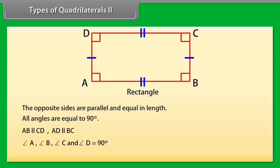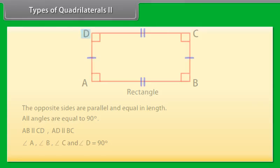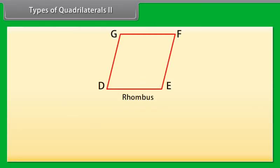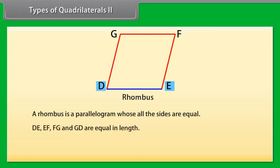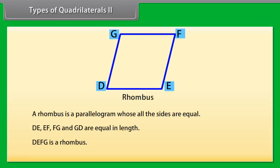Rhombus: A rhombus is a parallelogram whose all sides are equal. Here, DE, EF, FG, and GD are equal in length, so DEFG is a rhombus.